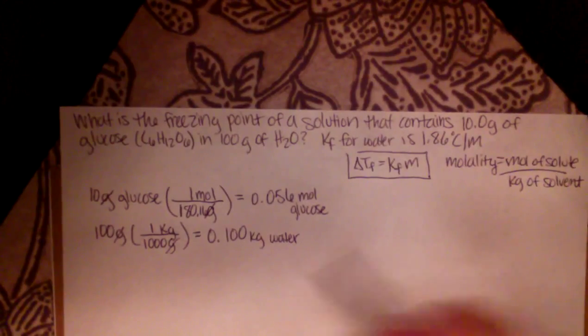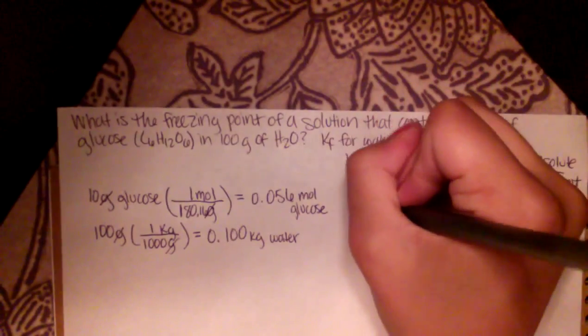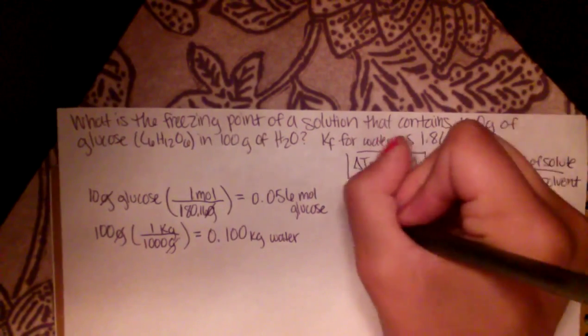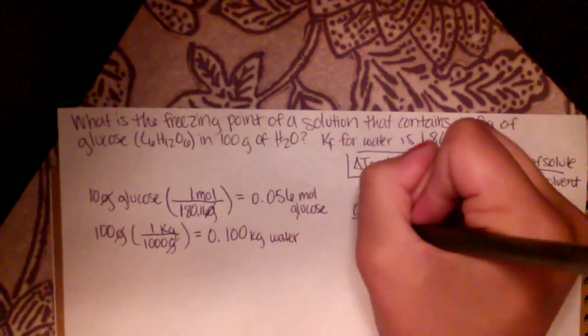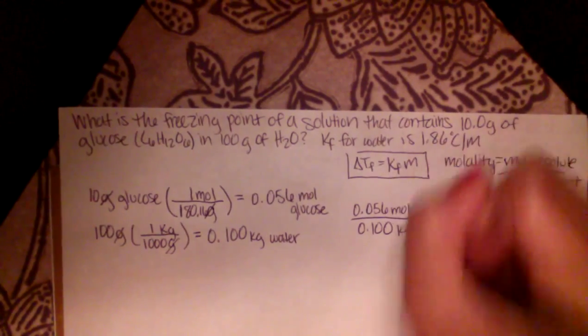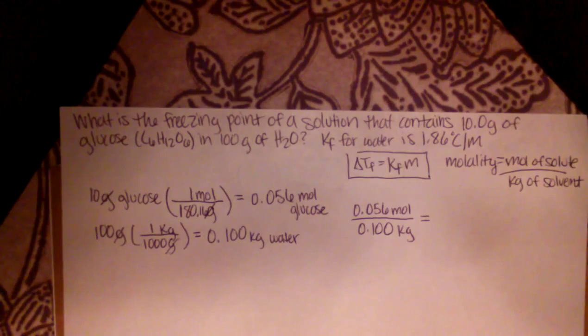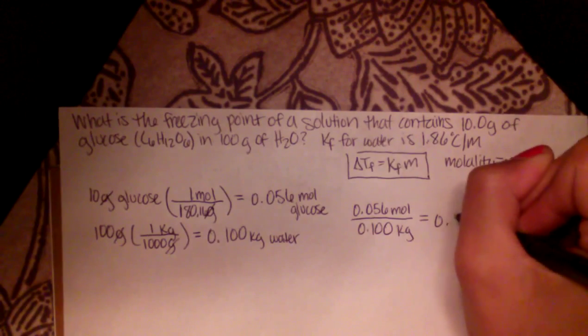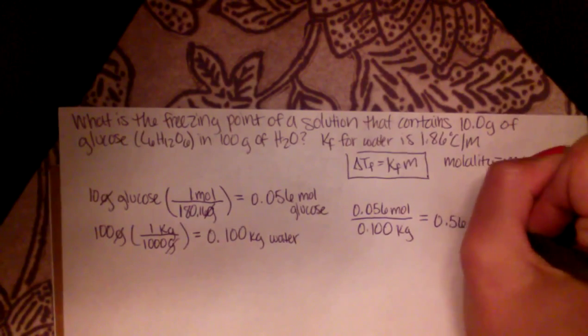So now we just set up our formula correctly. So our moles of solute over our kilograms of solvent. And we solve. And when we divide these two, we get 0.56 molality.